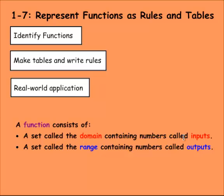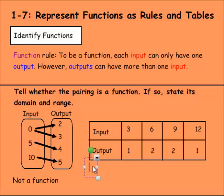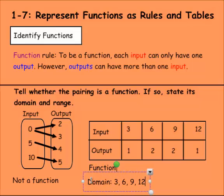So we need to find the domain. The domain are the inputs. The range are the outputs. We say that this is a function. And then domain would be three, six, nine, and 12. And then the range would be one, two, two, and one.